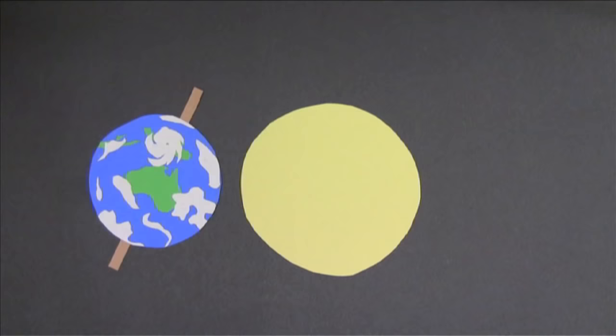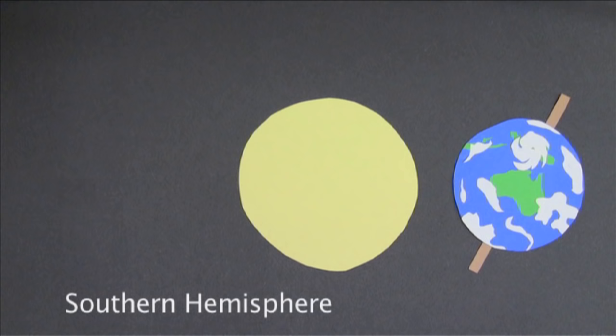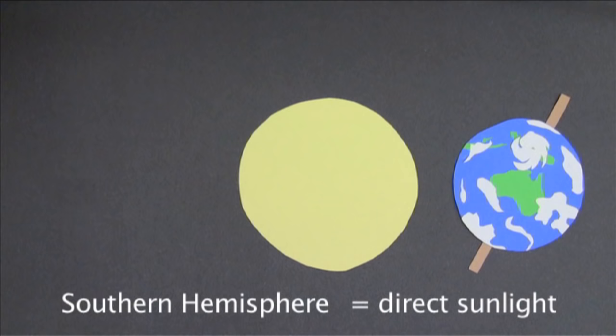Six months later, when the Earth is on the other side of the Sun, we have the opposite. It's the Southern Hemisphere receiving direct sunlight, so it's summer there. And the Northern Hemisphere is receiving indirect sunlight, so they're having winter.